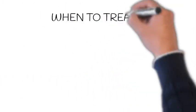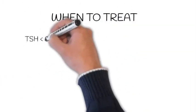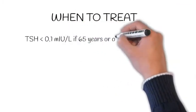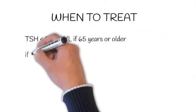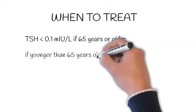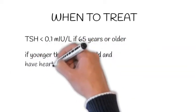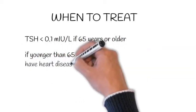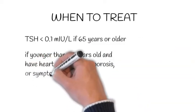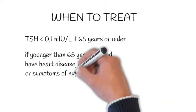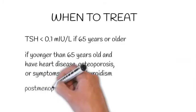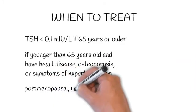When to consider treatment. Current guidelines recommend treating patients with TSH levels persistently less than 0.1 mIU per litre if they are 65 years or older, or if they are younger than 65 years and have heart disease, osteoporosis, or symptoms of hypothyroidism.